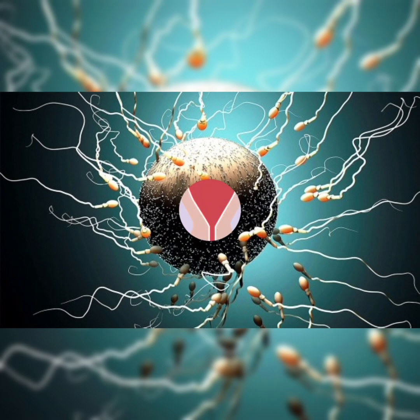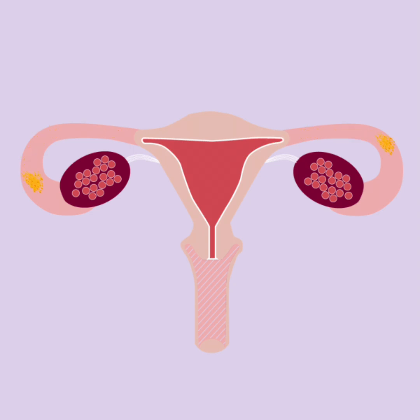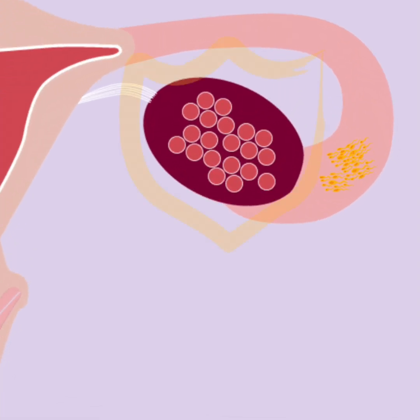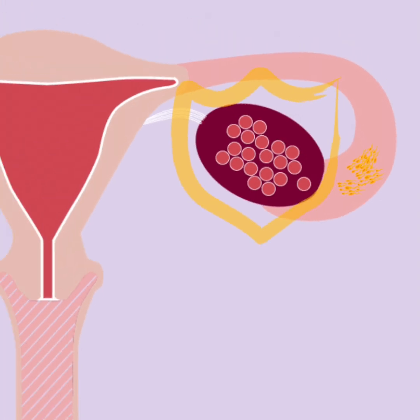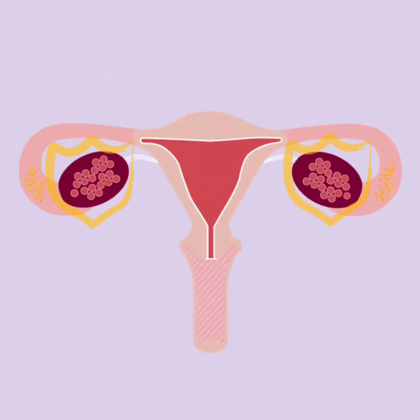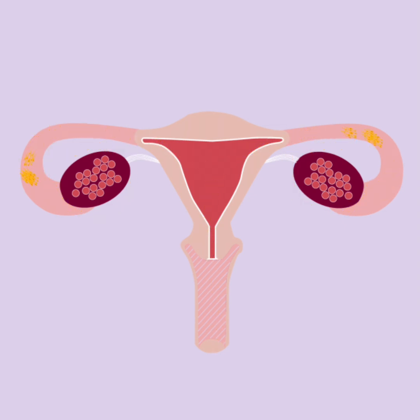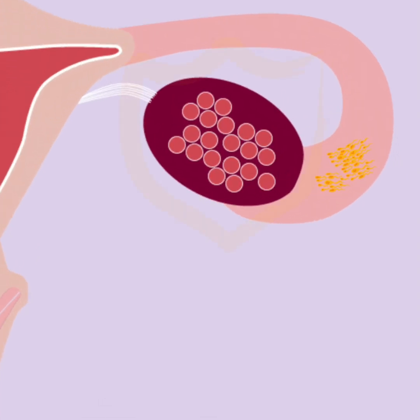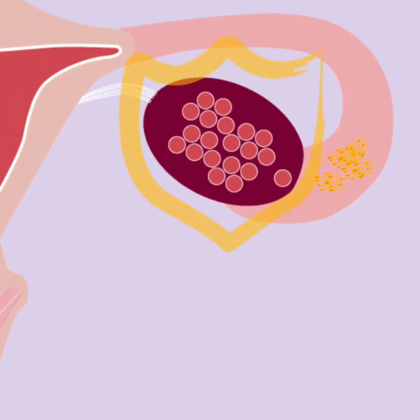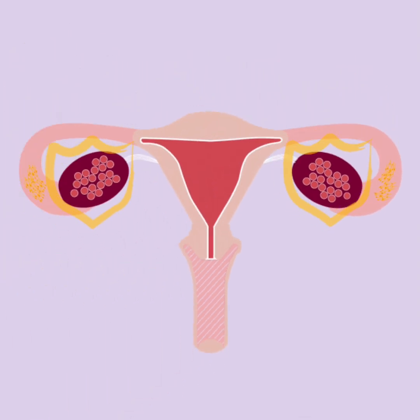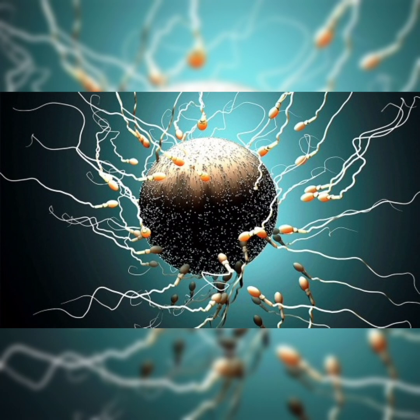The fertilized egg then moves to the uterus where it implants in the uterine lining. Fertilization begins with sperm traveling through the female reproductive tract to meet an egg in the fallopian tube. When a sperm successfully penetrates the egg's outer layer, it triggers chemical changes that prevent other sperm from entering. This fusion forms a zygote, which begins to divide and develop as it moves toward the uterus. Once there, the developing embryo implants into the uterine lining, leading to pregnancy.